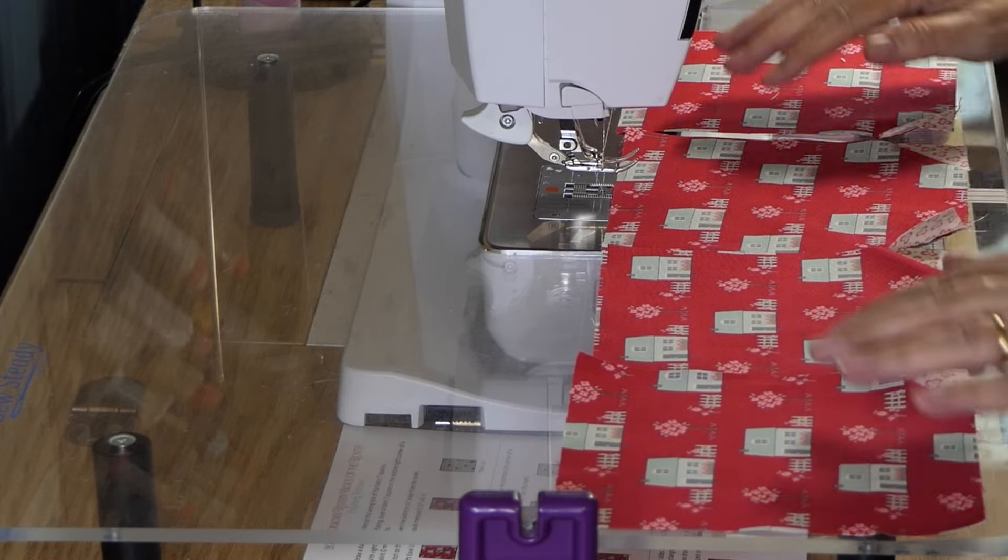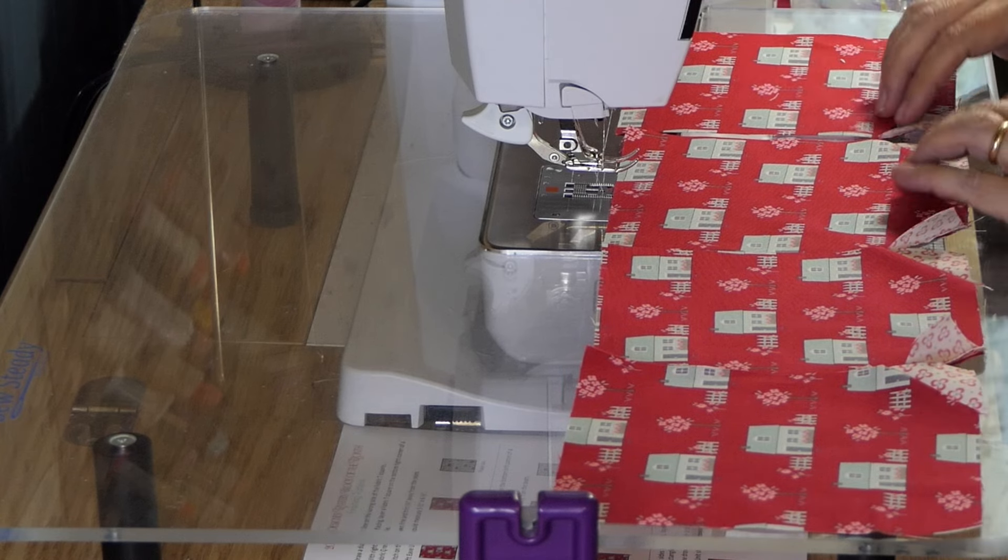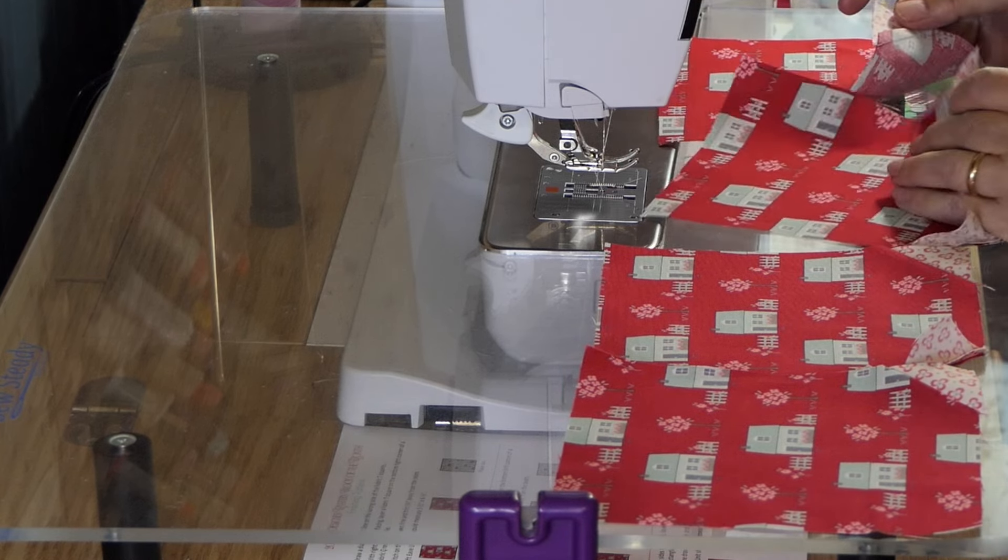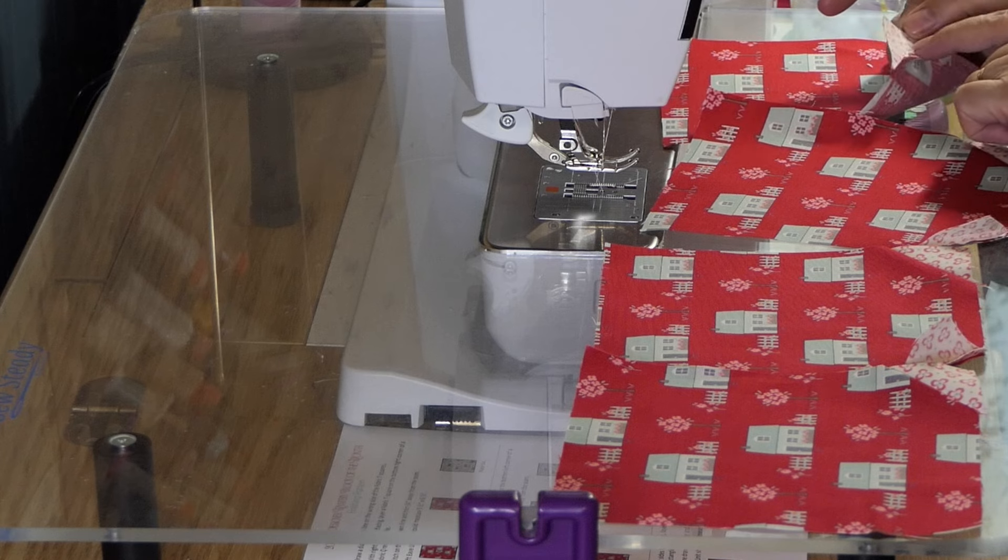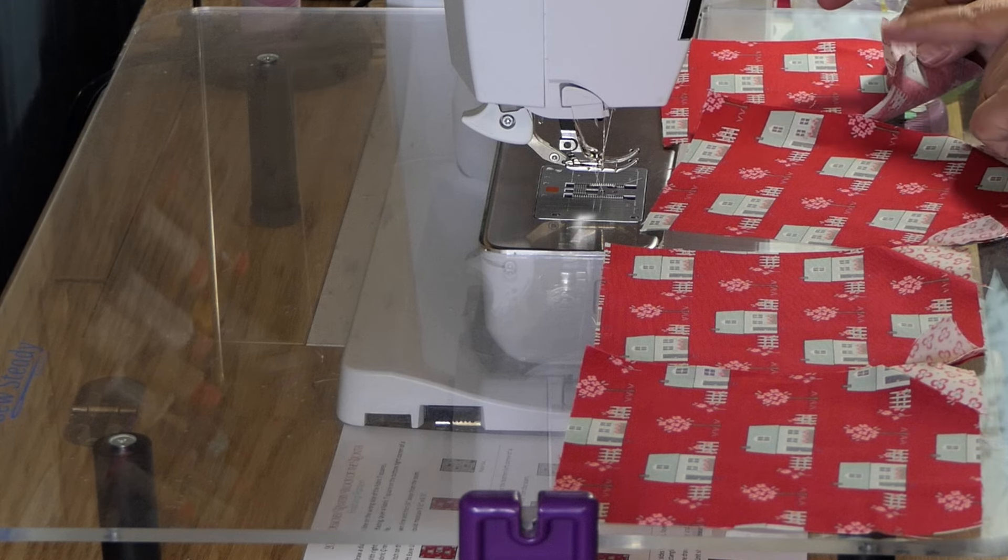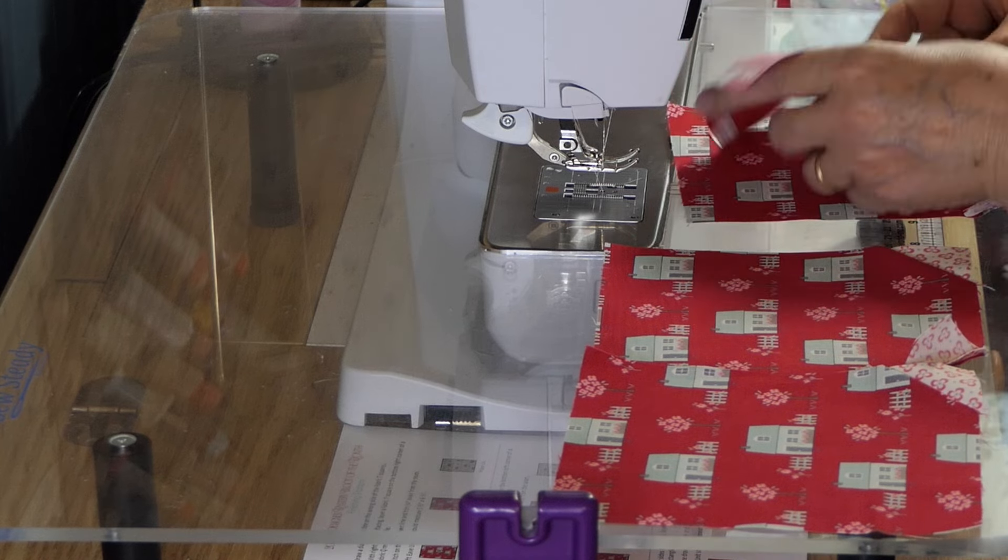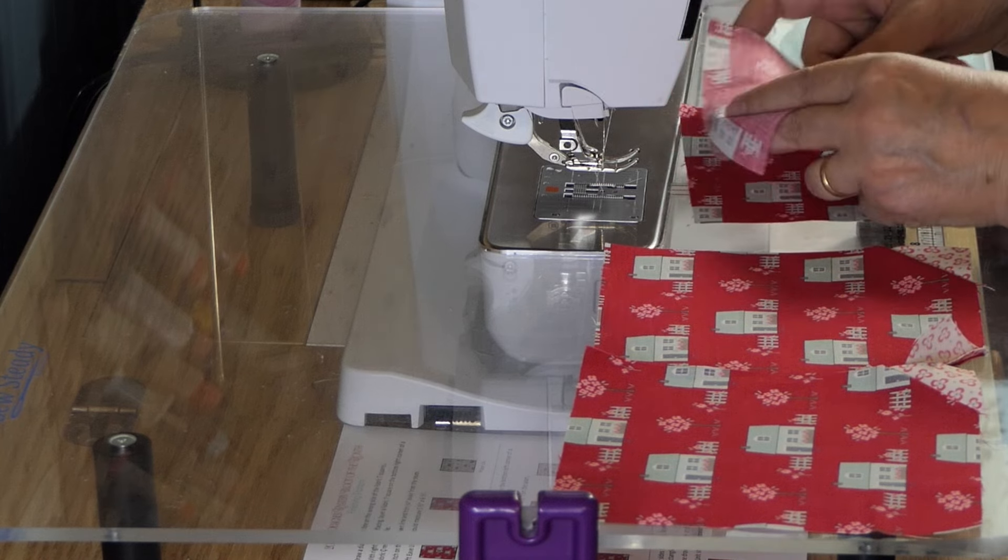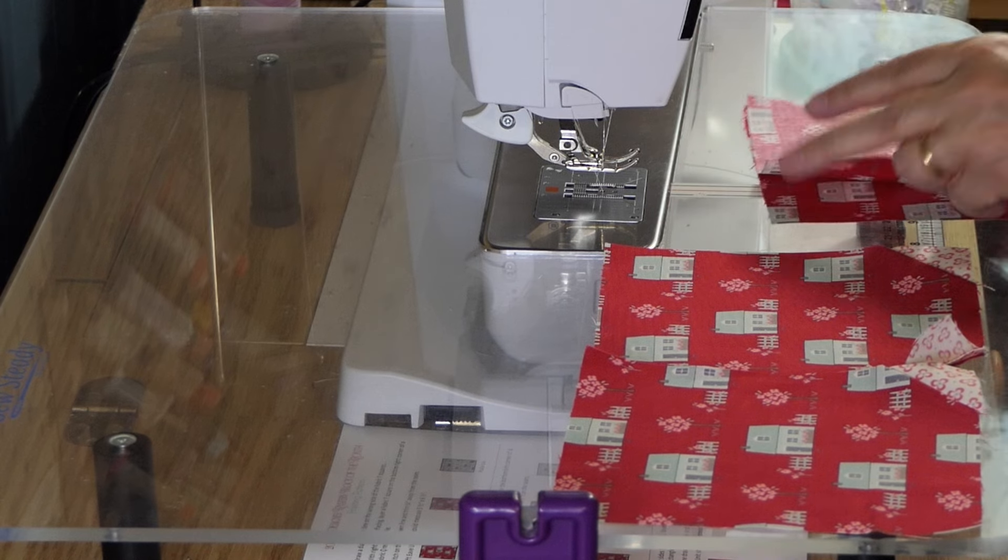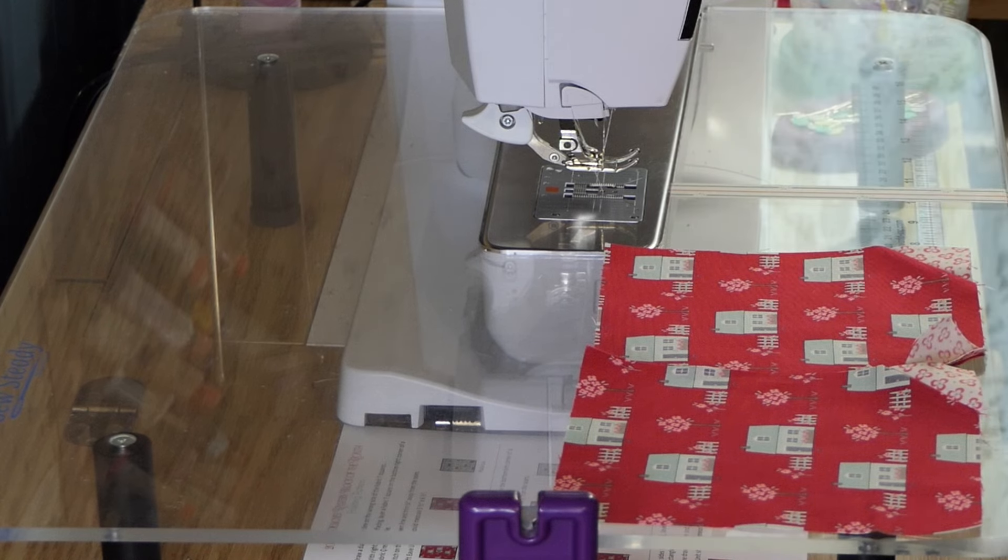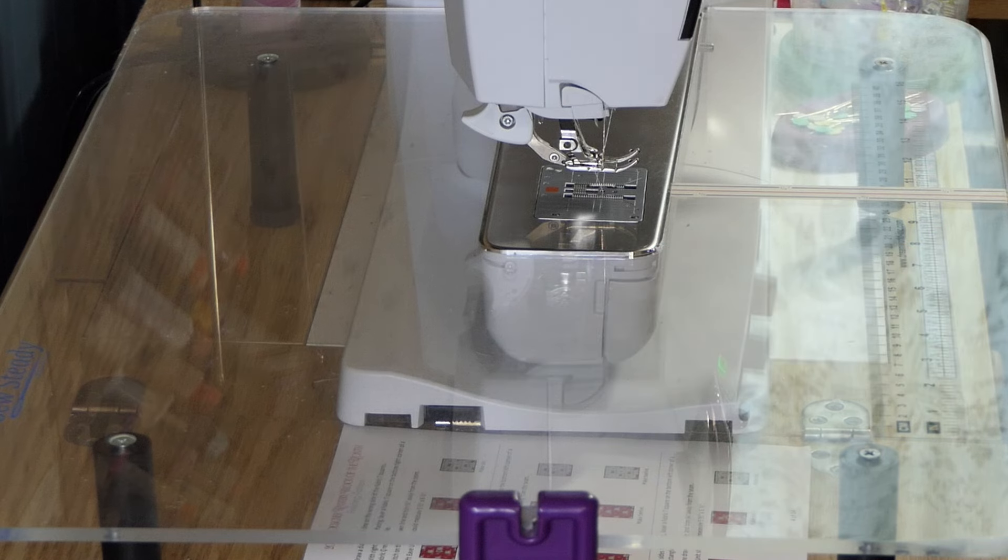Now we're going to sew these together and I've got one pressed towards the triangle and one pressed towards the roof so that when I flip it over it can nest and then I will just sew all these together.